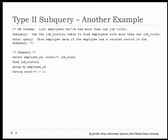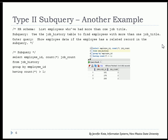Let's take another look at another type 2 subquery. We're going to list employees who've had more than one job title, in other words, employees that have had more than one position with the company. We're using the HR schema. The subquery will use the job history table to find employees with more than one job title, and the outer query will show employee data if the employee has a related record in the subquery. Our subquery we're going to use to get a job count grouping by employee ID, and we will only list employee ID if the count, the job count, is greater than one. When we do that, we see that we have three people who have a job count of two.